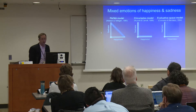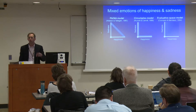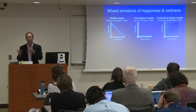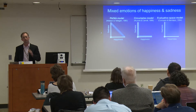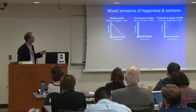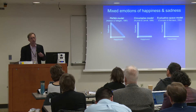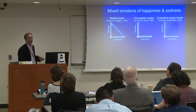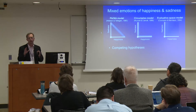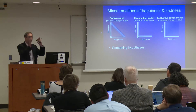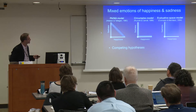In contrast, there's another model — the evaluative space model, which originated in attitudes research — which contends that positivity and negativity are separable, giving rise to attitudinal ambivalence. In my research, I've tried to see whether we can also use the evaluative space model to better understand emotional experience. If we apply it to emotions, it raises the possibility that maybe we can experience mixed emotions of happiness and sadness. So we've got these competing hypotheses, and I am focused specifically on happiness and sadness because they provide tests of these competing dimensional models.